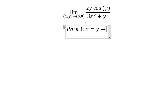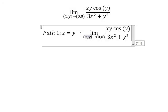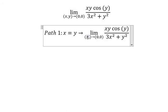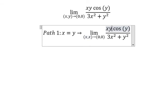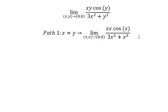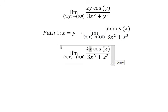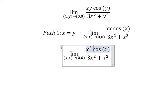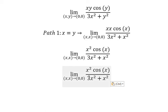When x equals y, we change y into x. So this one, you get x times x times cos(x). That means you get x squared over 3x squared plus x squared.